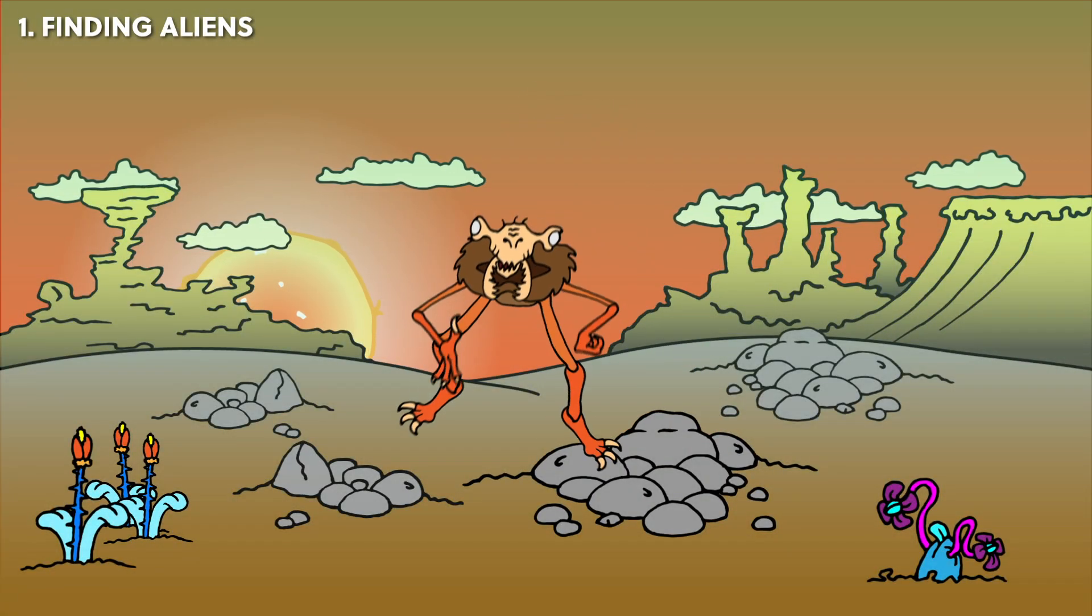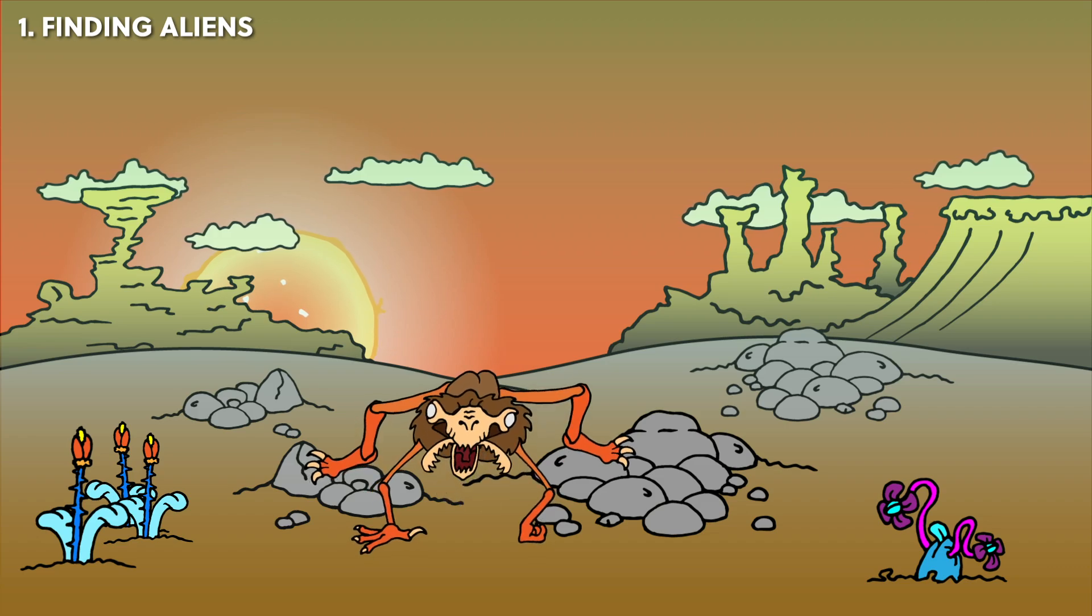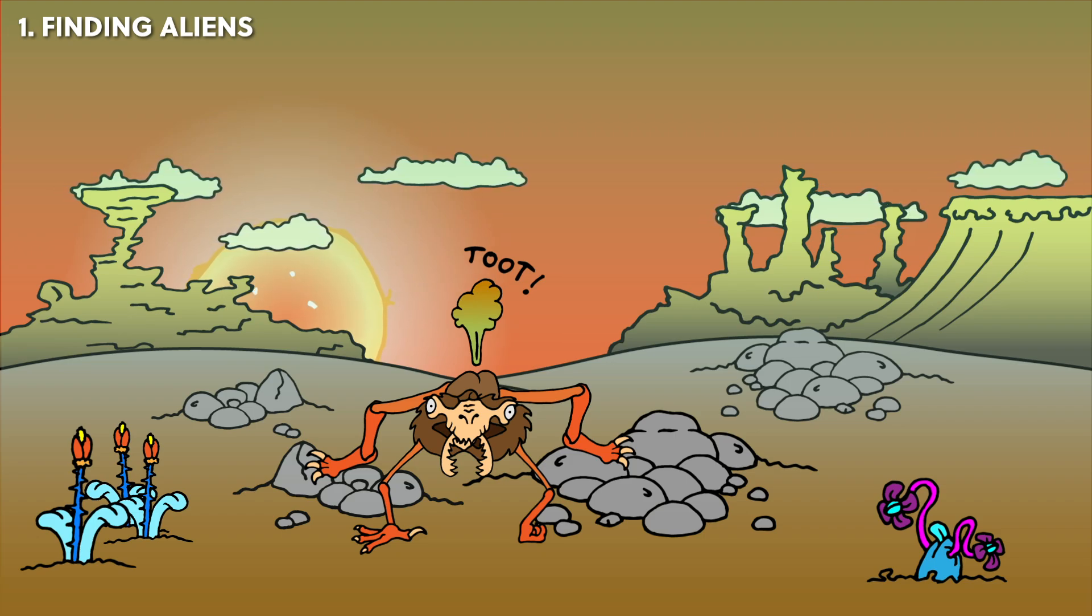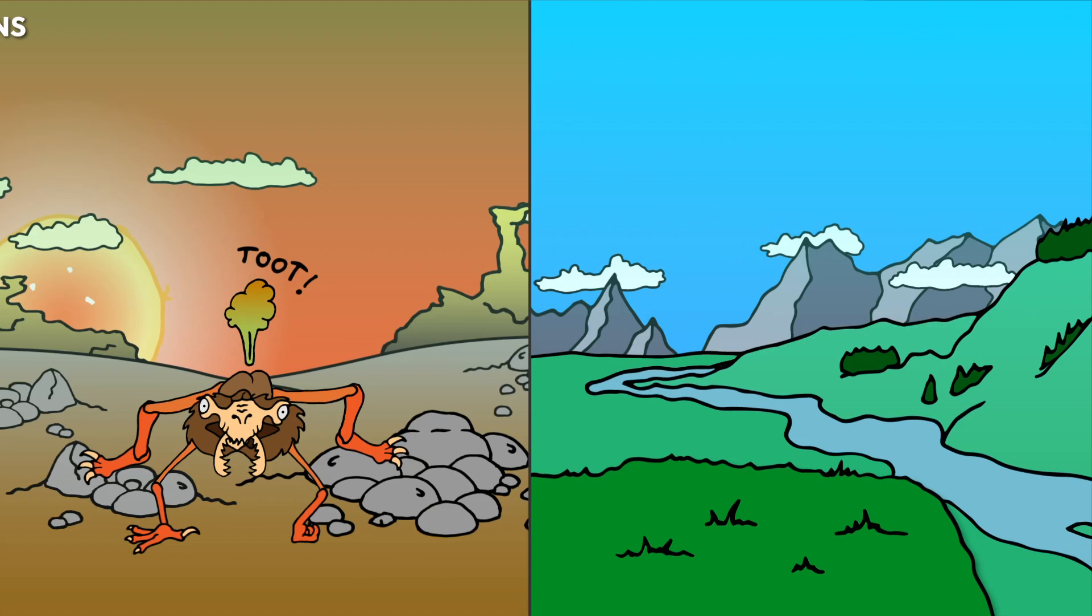If we discover aliens, we'll probably see them because of their farts. The first signature of extraterrestrial life is likely to be unnatural compositions of gases in the atmosphere of a distant exoplanet. Think of the Earth—the atmosphere is full of oxygen, and this is only true because it keeps on being replenished by plant and microbial life.